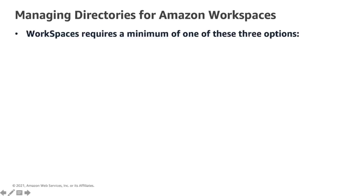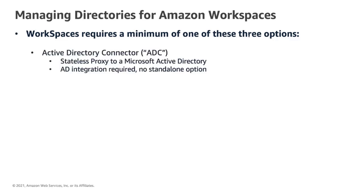There are three options and we can use one or more of them based on the use case or scenario. Let's consider the first scenario: you already have an Active Directory running on-premises. How do you integrate Workspaces with it? The answer is Active Directory Connector. This is basically a directory gateway that proxies your directory requests to your on-premises Active Directory. You could also use this if you want to connect into an Active Directory that you are running on AWS. One thing to note about this AD connector is it does not work as a standalone directory — it has to integrate with a backend Active Directory.